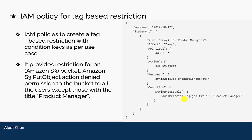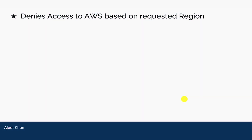This IAM policy creates a tag-based restriction using condition keys. It provides restriction for an Amazon S3 bucket for the action S3 PutObject, denying everyone except those with the job title 'product manager'. This is also helpful to tighten security.